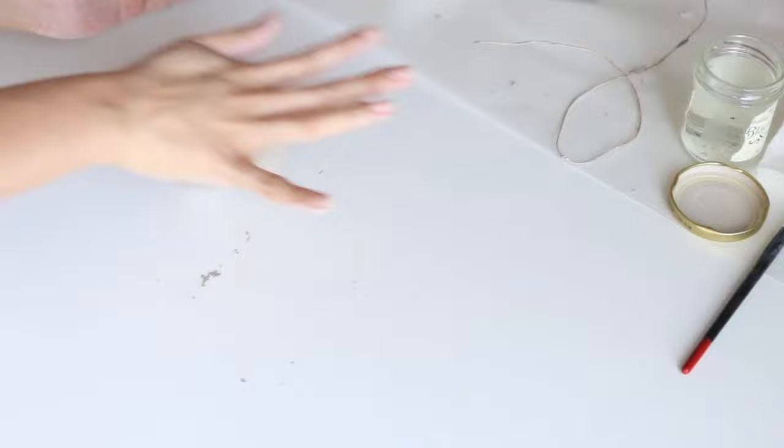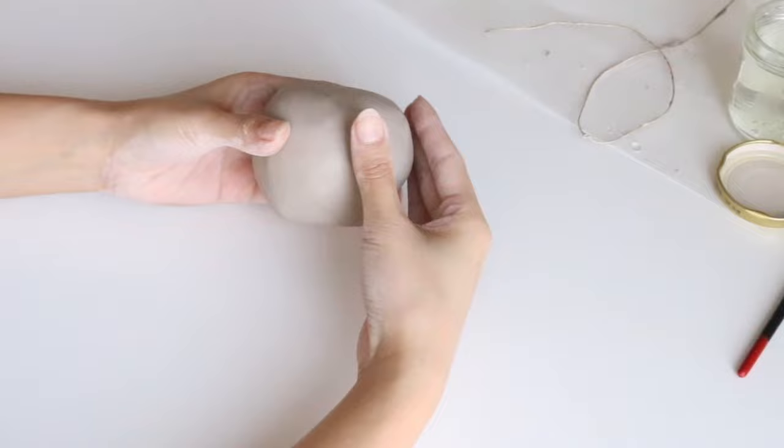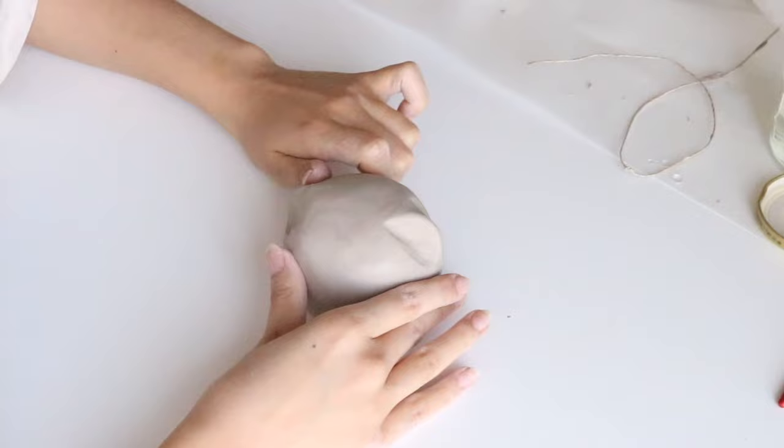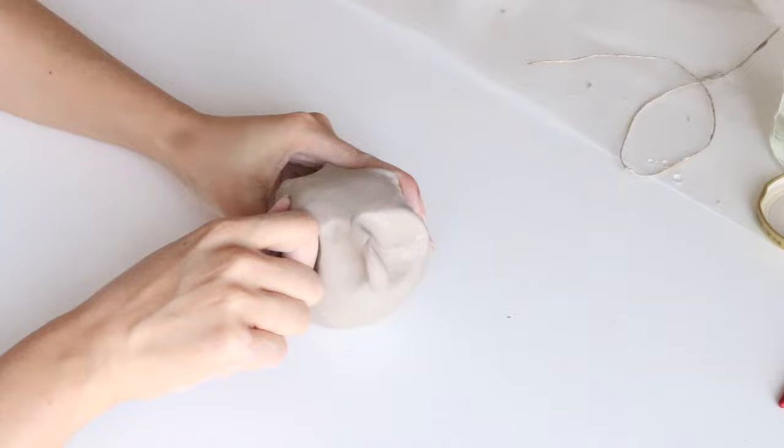We're going to start by rolling out some clay into a ball. I got mine to the size that fit in both hands. Then we're going to start pinching out the flaps. There's six flaps on this piece, and we're going to do some rough pinching around to mark where those six flaps will go.